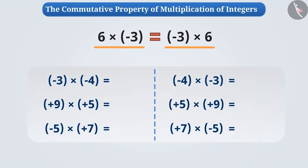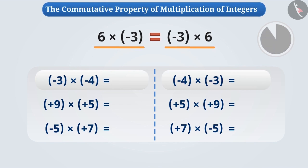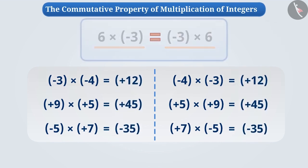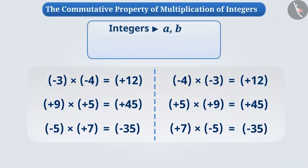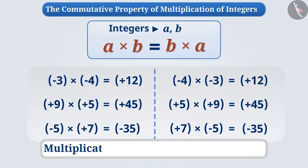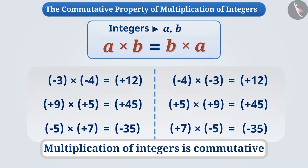You can also find similar results from the following examples. In this way, changing the order of any two integers for multiplication does not change the result. Therefore, the multiplication of integers is commutative.